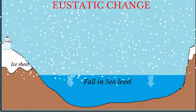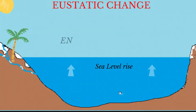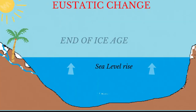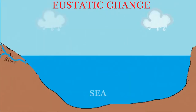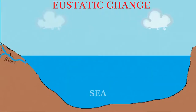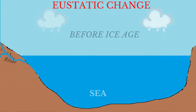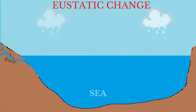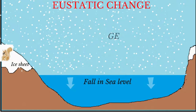Eustatic sea level change may result from climate change. Over long periods of time the climates of the world may experience changes. At the beginning of an ice age, temperatures fall and water is frozen and stored as glaciers and ice sheets on the land. This prevents water on the surface from flowing into the sea, which results in a fall in sea level. At the end of the ice age, temperatures rise once more so that the ice sheets melt and water begins to flow into the sea, causing sea level to rise.